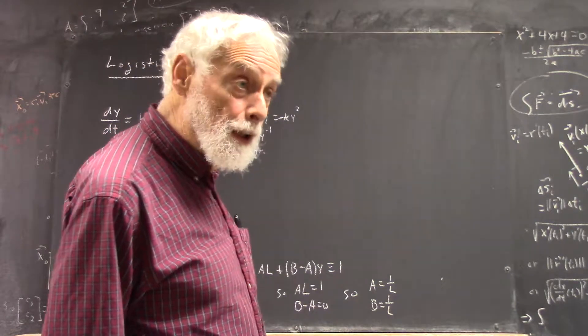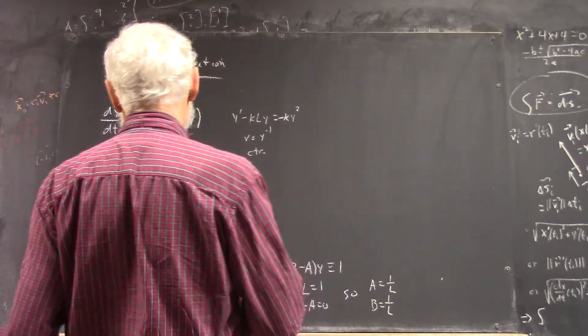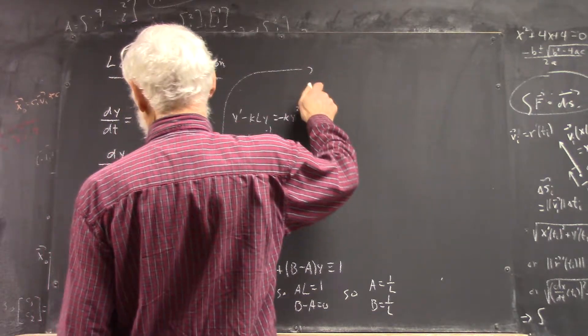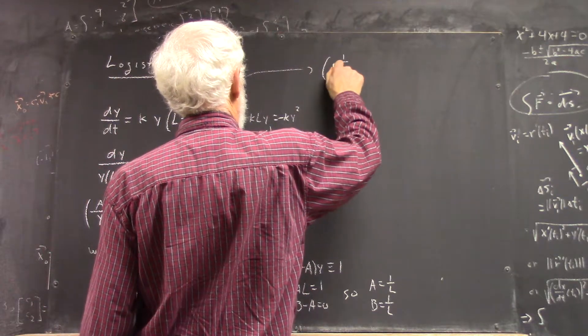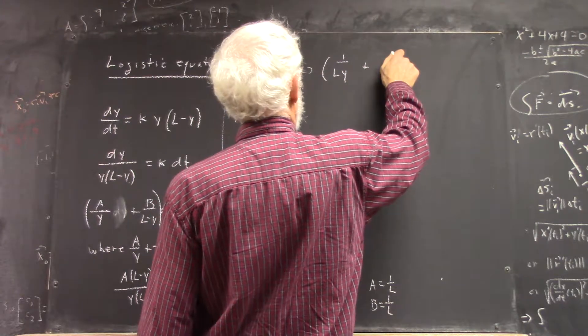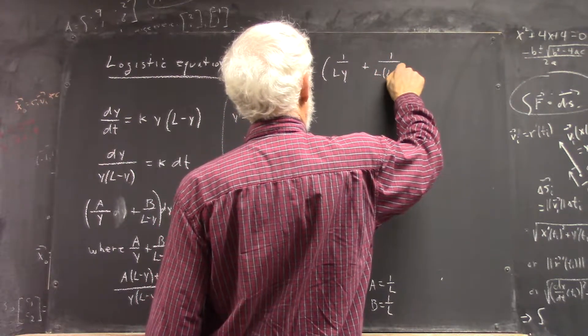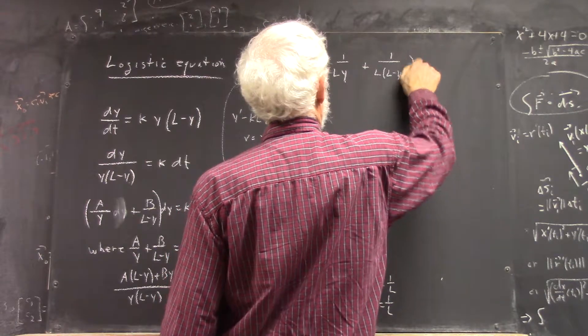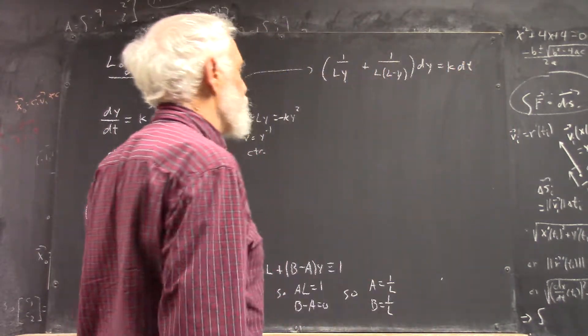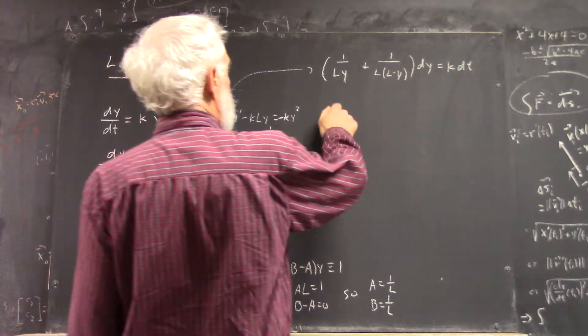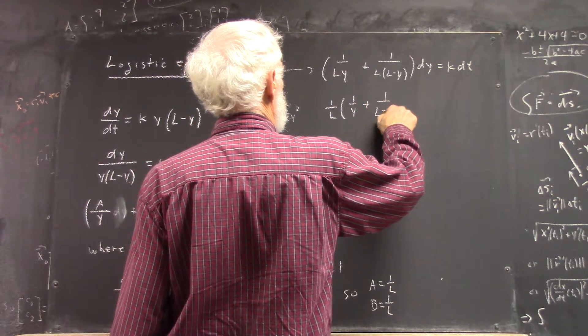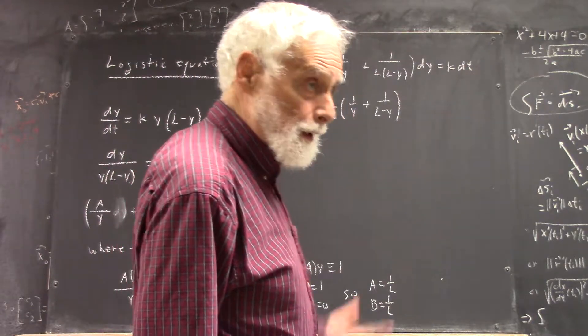Okay, so if I haven't made a stupid algebra error, we see that now. So, this equation with that information becomes 1 over L times 1 over y plus 1 over L minus y dy equals k dt. Okay, or just take the 1 over L out so we don't have to worry about that denominator getting a little more complicated.